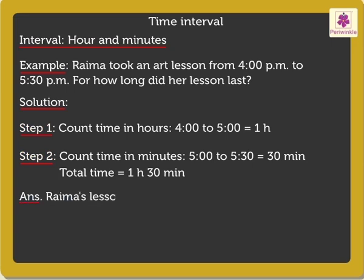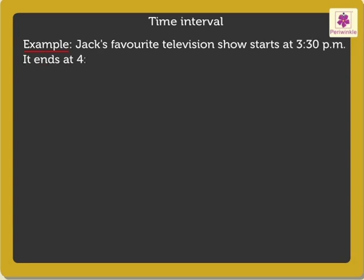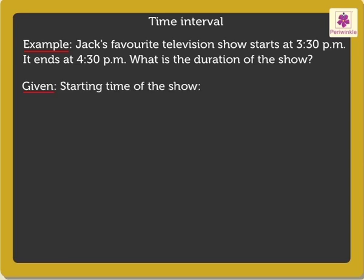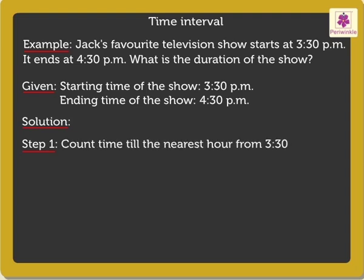Thus, we say Rehma's lesson lasted for 1 hour 30 minutes. Lastly, let us learn to calculate the time interval by another method using an example. Jack's favorite television show starts at 3:30pm and ends at 4:30pm. What is the duration of the show? The starting time is 3:30pm and the ending time is 4:30pm. Step 1: Count time till the nearest hour from 3:30pm — on counting till the nearest hour, which is 4pm, we get the time as 30 minutes.